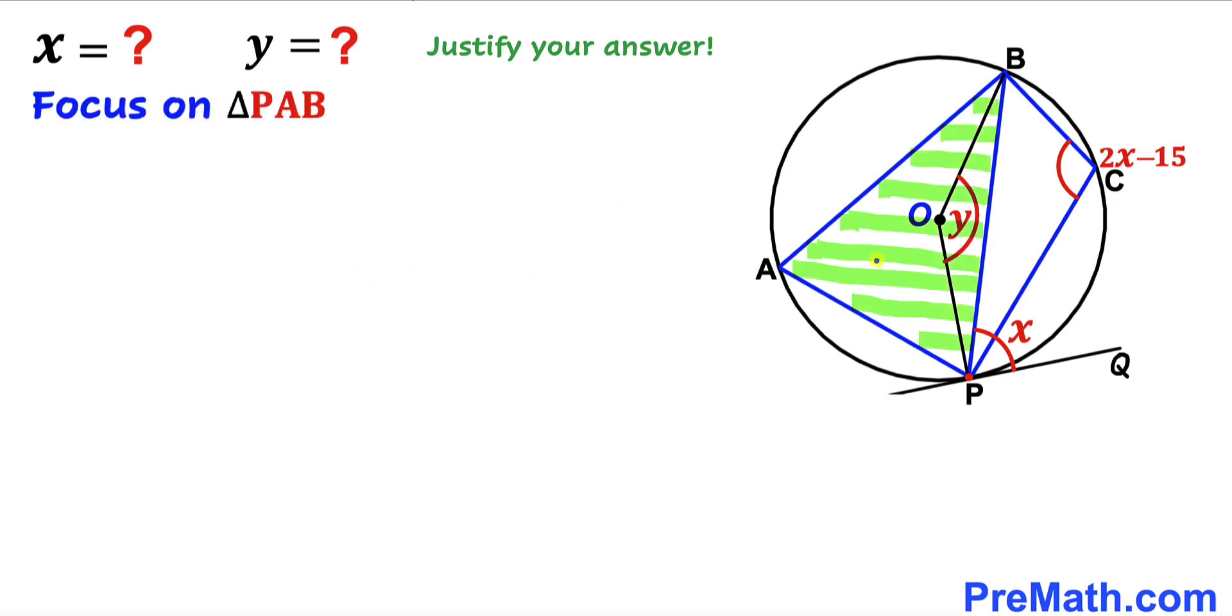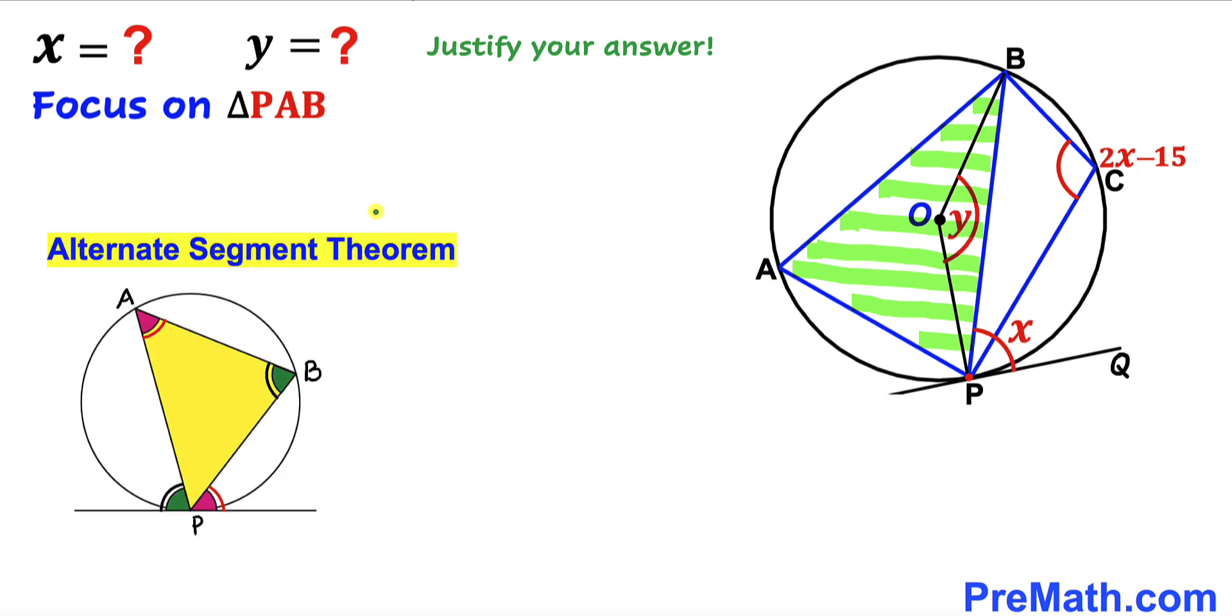Let's get started. Here's our first step: focus on triangle PAB and recall the alternate segment theorem. According to this theorem, where P is our tangent point, this angle is congruent to that angle. If I call this angle X, then this angle has to be X as well. Therefore, angle PAB is going to be angle X.